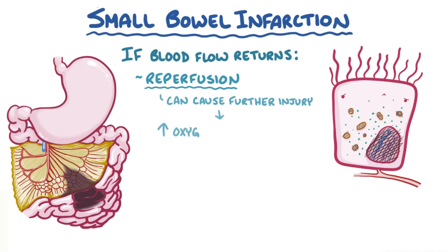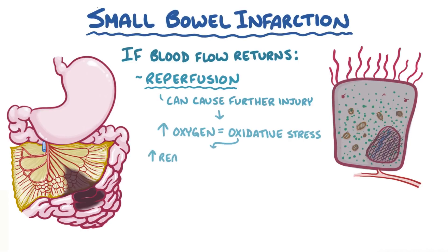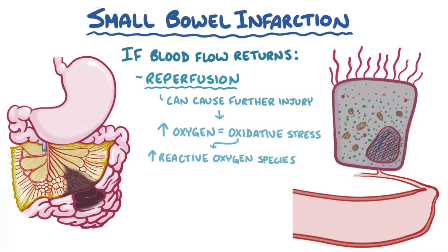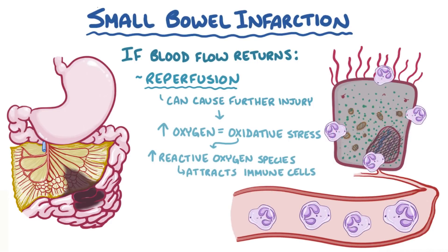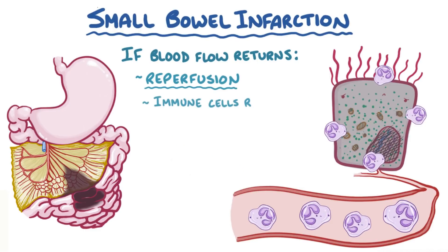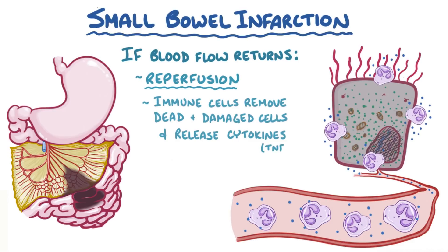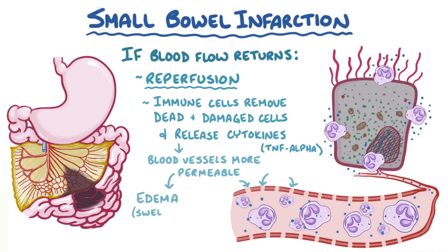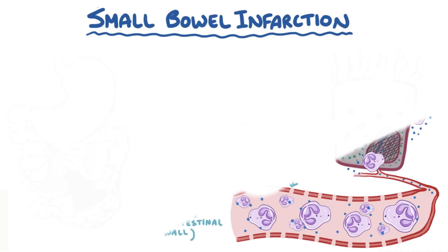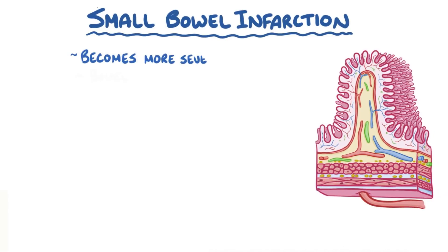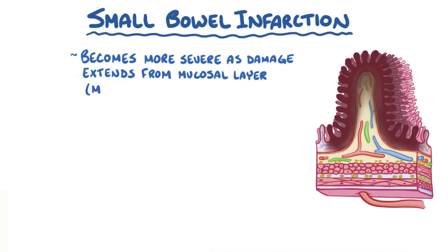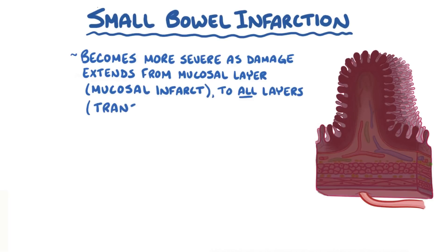In reperfusion injury, the influx of oxygen into an already damaged cell can be overwhelming and can cause even more oxidative stress, which worsens the cell damage. As damaged cells release reactive oxygen species, it triggers an inflammatory response which attracts immune cells, like neutrophils. The immune cells remove dead and damaged cells and release cytokines, like tumor necrosis factor alpha. The cytokines cause blood vessels to become more permeable to fluid and more immune cells, resulting in bowel edema or swelling of the small intestinal wall. Small bowel ischemia and infarction becomes more severe as the damage extends from just the mucosal layer, called a mucosal infarct, to all layers, known as a transmural infarction.